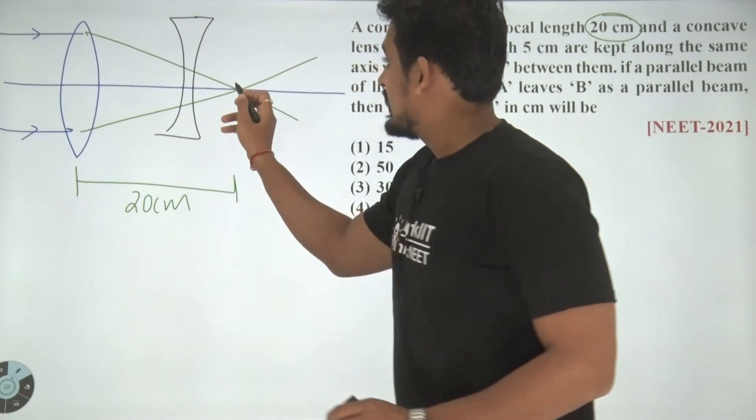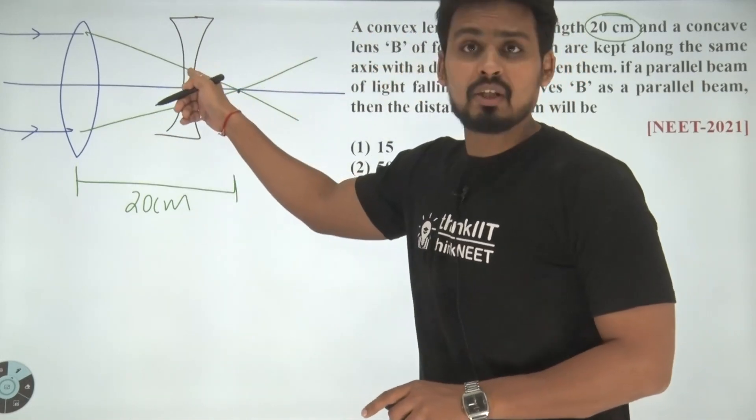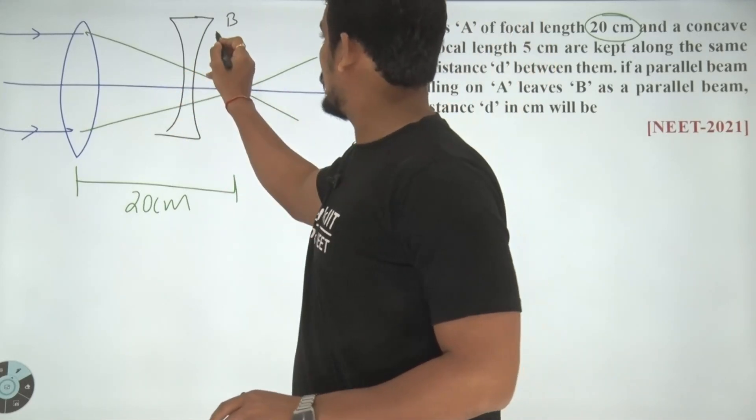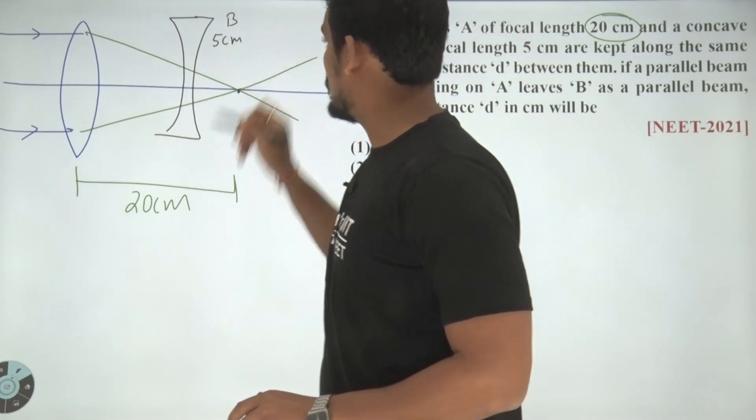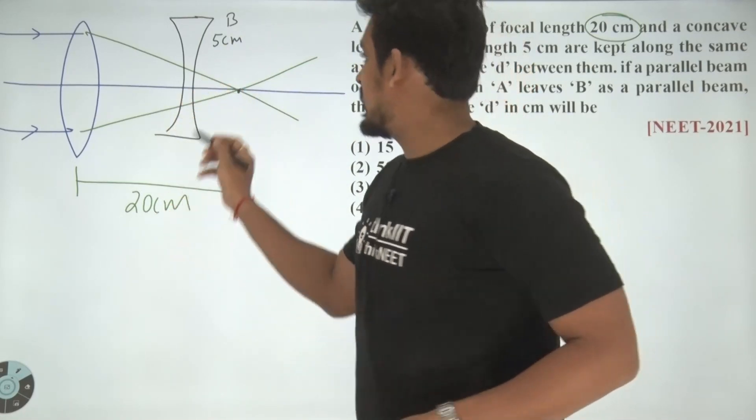I must place the concave lens such that the intersection point is the focus of this particular concave lens, which is lens B, and the focal length of this is given as 5 centimeter.